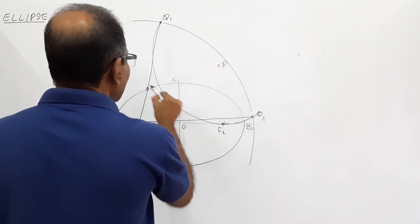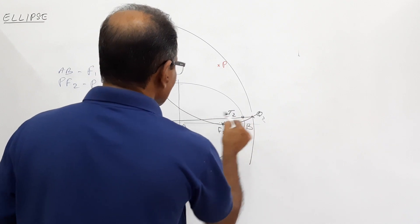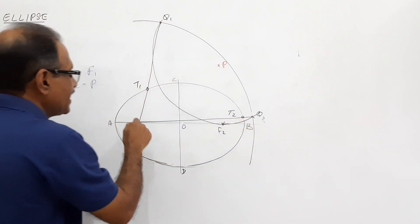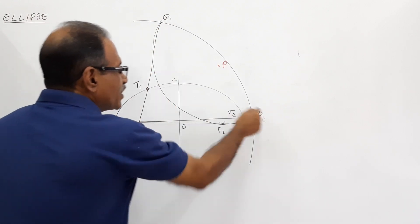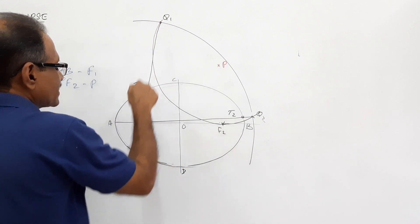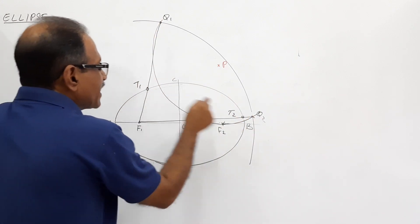T1, T2. What are the points? Those are the points where F1Q1 and F1Q2 cut the ellipse. Then Q1 is connected to F1, Q2 is connected to F1. They meet at the ellipse at T1 and T2.